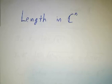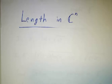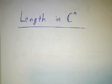For real inner products, we saw that there was a really close connection between the length of a vector and the inner product. We'd like to do the same thing for complex inner products, but first we have to understand what length means in the simplest case, which is C^n.